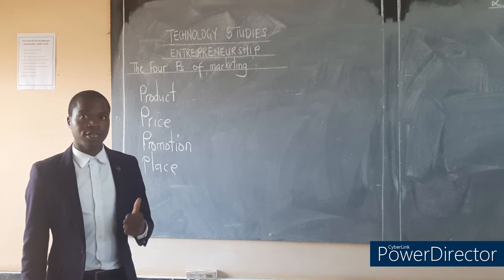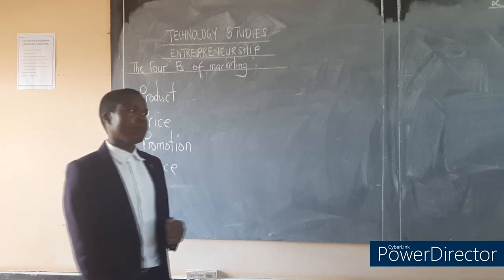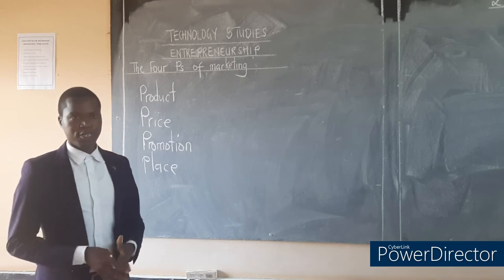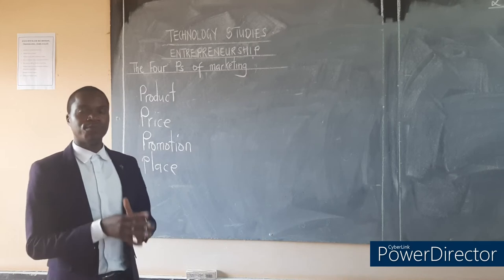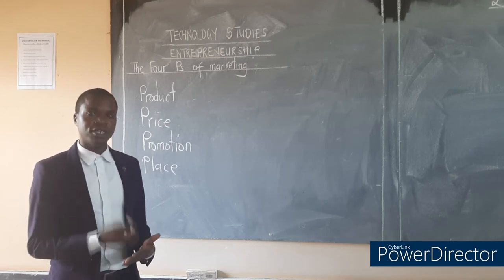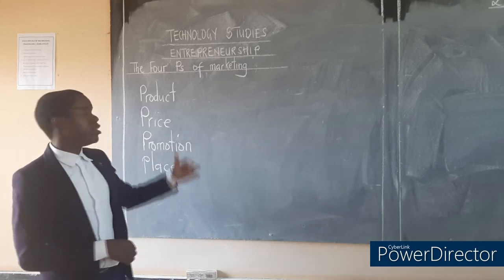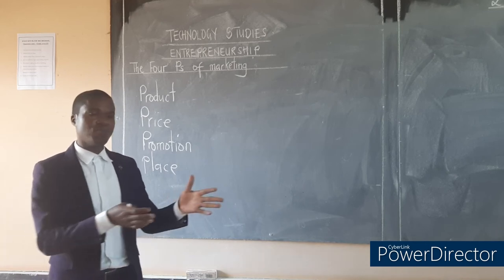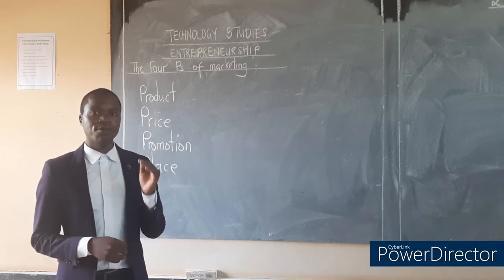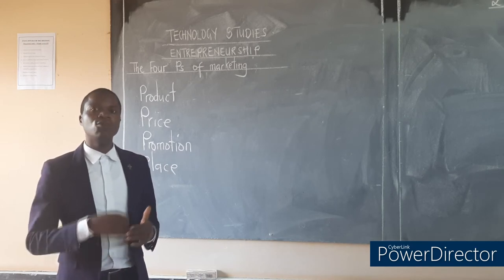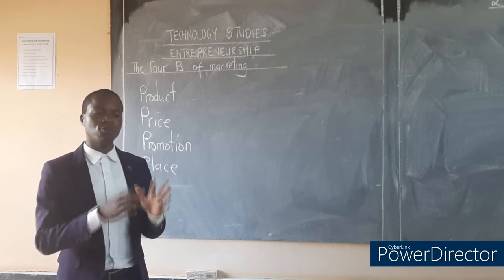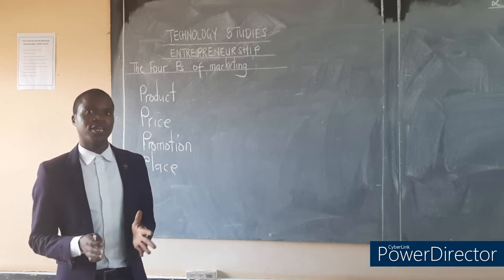In business you need to have goods and services for your business to be moving. The second P is price. When you have goods or services in business you need to price them. When pricing your products, make sure you consider all the things you have used and all the time you have spent to come up with those products, then you set your price.